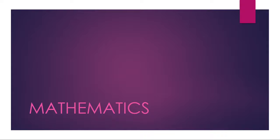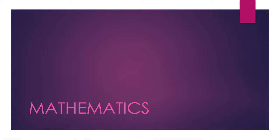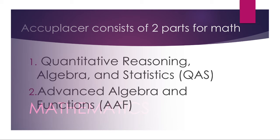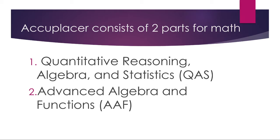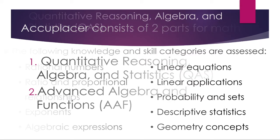Today we're going to be looking at the mathematics portion of the ACCUPLACER. For the ACCUPLACER, the math section consists of two parts. The first is called Quantitative Reasoning, Algebra, and Statistics. The second one is called Advanced Algebra and Functions.